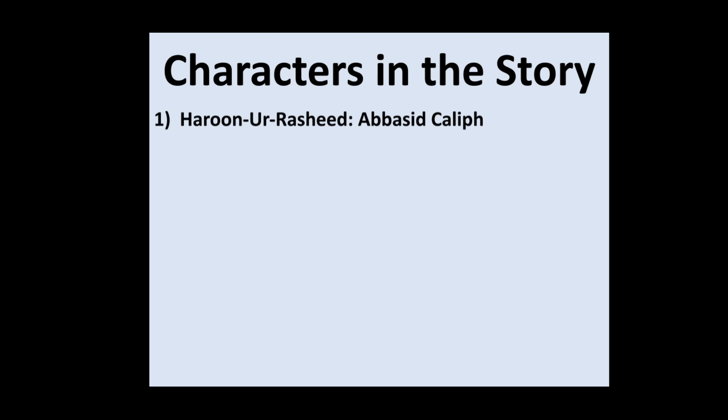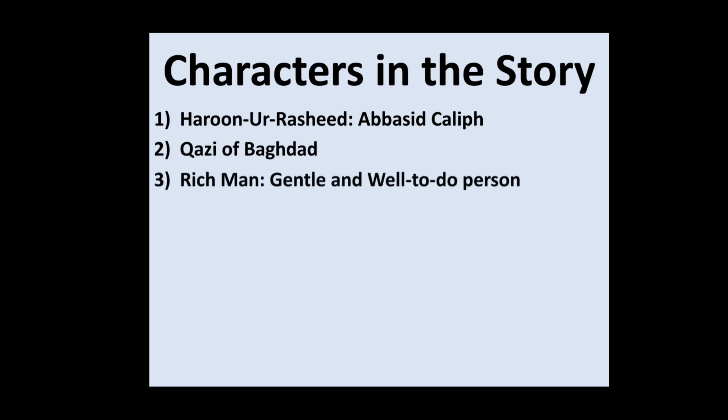There are four main characters. The most important character of the story is Harun Rashid, who was the Abbasid Caliph of his time. Then comes the Kazi of Baghdad, the chief justice. Then the rich man, who was a gentle and well-to-do person wearing fine cloth. The fourth is the beggar, who was very dishonest and clever. The white horse is also part of this story.